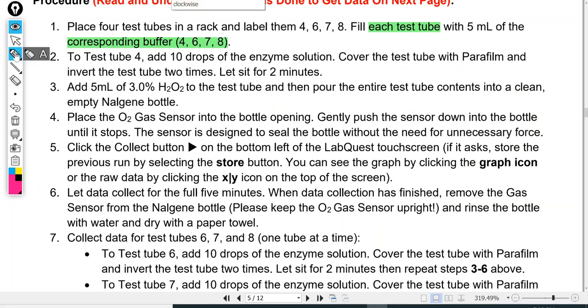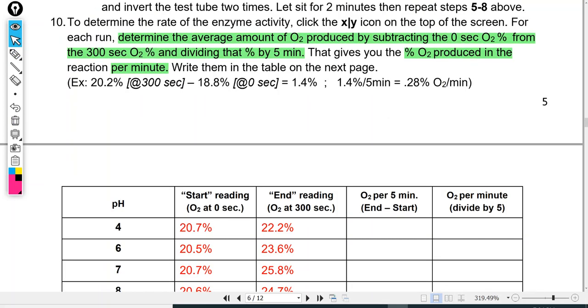So here are your experimental conditions. You have test tubes with a pH of 4, 6, 7, and 8 in it. And once again, you are just basically at those different pHs, you are putting your enzymes in, and you're seeing which one liberates the most oxygen. And that's going to tell you which was the most efficient and active variable condition.